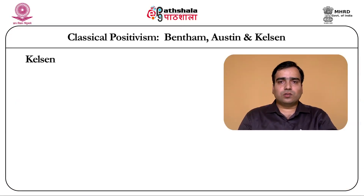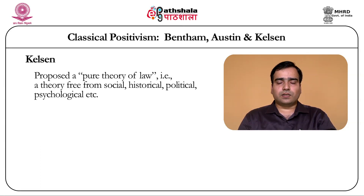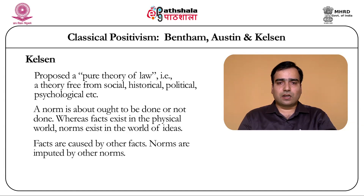Now I will be discussing the theory of Hans Kelsen. Hans Kelsen belongs to the Vienna School of Thought and he proposed a pure theory of law — a theory free from social, historical, political and psychological factors. According to Kelsen, facts consist of things and events in the physical world; facts are about what there is. When we wish to know what caused a fact, we look for another fact. A norm according to Kelsen is about what ought to be done and not done. Whereas facts exist in the physical world, norms exist in the world of ideas. Facts are caused by other facts; norms are imputed by other norms.